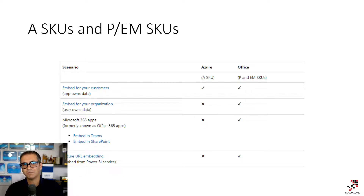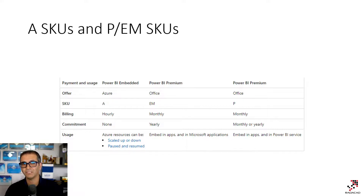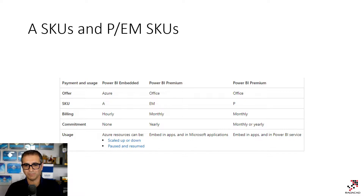EM SKUs are also embedded, but they give you a few more options. For example, one option you get with EM SKUs is that in addition to embedding, you can also have Power BI accounts for users — they can actually log into Power BI. You can use features such as Power BI Secure Embed, which is a kind of embedding but not as complex — it doesn't require a web developer. It comes with a simple iframe you can add to a web page, but users need to log in. EM and A SKUs can both be considered embedded, but EM is paid on a monthly basis and cannot be turned off overnight, versus A SKUs which are hourly. So A SKUs are more developer-oriented, EM SKUs are more like a simplified version, and P SKUs are the full Premium option with all premium functionalities.